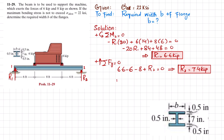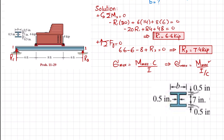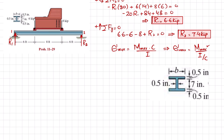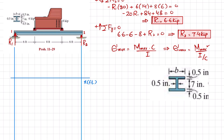With R1 and R2 known, we draw the shear force and bending moment diagram, because maximum stress equals maximum bending moment times c divided by I. Rearranging, the section modulus I/c equals maximum bending moment divided by maximum stress. We need the maximum bending moment. Set up the axes: x in feet along the beam, shear force in kips on the vertical axis — marking increments of 5 kips.